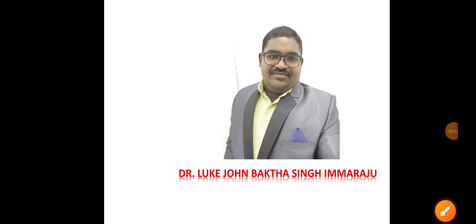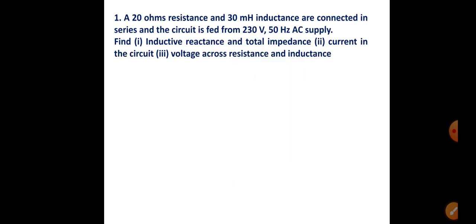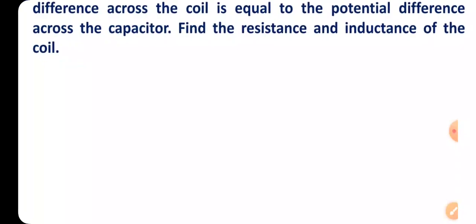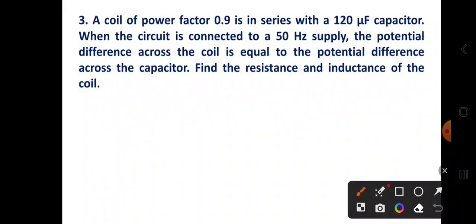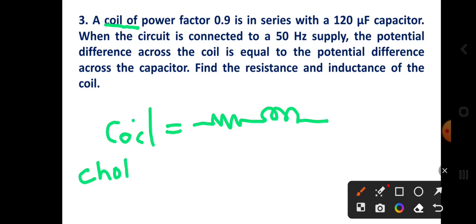Welcome back to Easy Tech Masters online series. Here we go with one more AC fundamentals problem. The problem is very beautiful, let's see what it is. A coil represents a combination of resistance and inductance (R and L). Whenever you see coil or choke coil in a problem, you need to consider this as the combination of R and L.